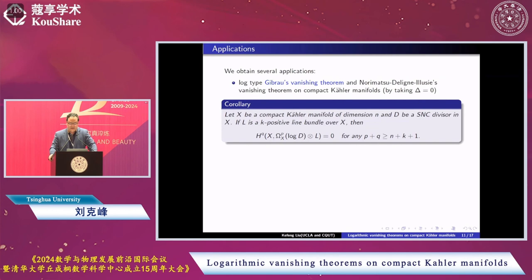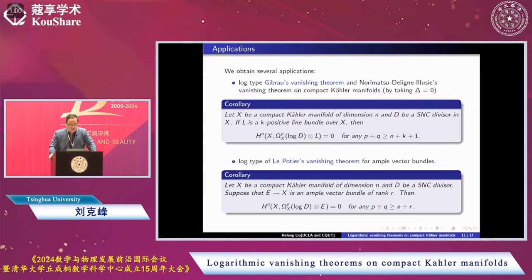There are several applications. As a corollary, the first one: we can have a log type of Girbau's vanishing theorem and the Nakamura-Deligne elliptic vanishing theorem on compact Kähler manifold by taking delta equal to zero. So we consider a compact Kähler manifold dimension n and a simple normal crossing divisor D. If we have a positive line bundle L over X, then H^q(omega^p(log D) tensor L) equals 0 for any p plus q greater or equal to n plus k plus 1.